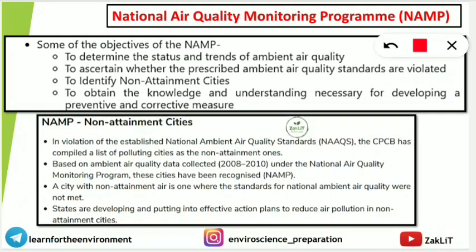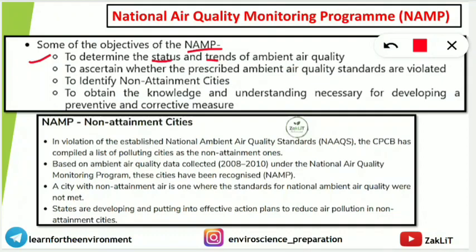The major objectives of NAMP are: first, to determine the status and trends of ambient air quality at each location — whether pollution levels are increasing or decreasing; and second, to ascertain whether the prescribed ambient air quality standards set by CPCB are being violated at a given place.